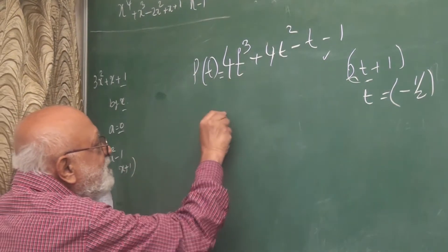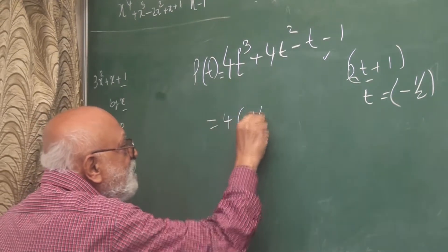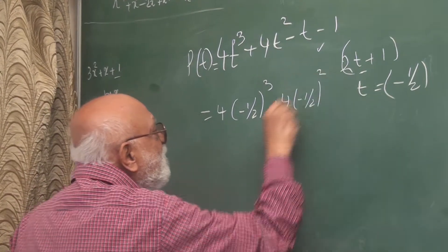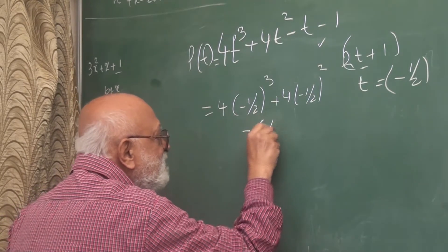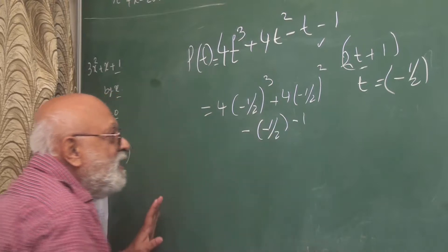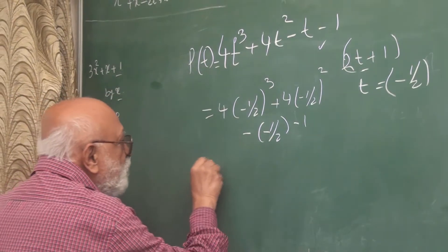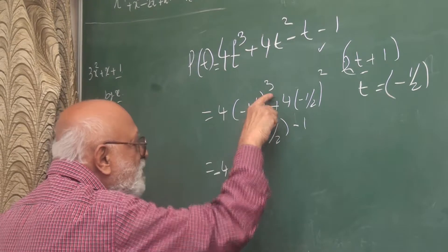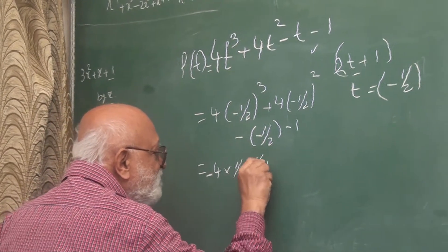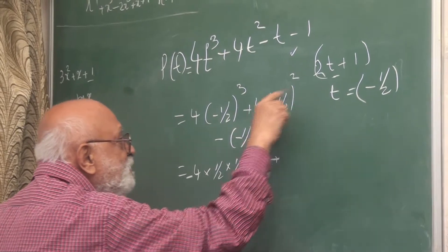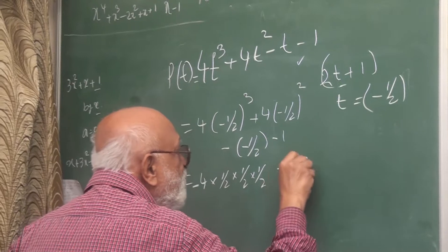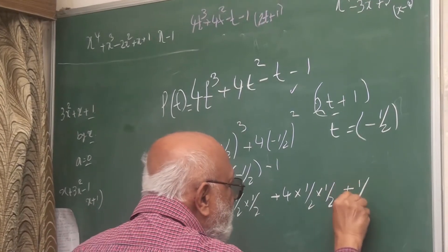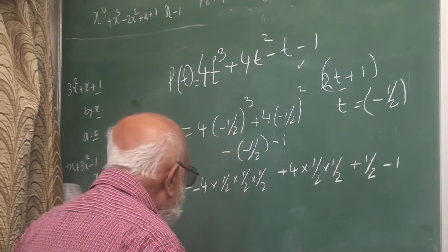Let us put the value of t here. This is 4 into minus half cubed, plus 4 into minus half squared, plus minus half minus 1. So it will be 4 into minus, this will be minus 4 because this minus will come — this is cube — so this will be half into half into half, plus this will be plus because it is squared, so this will be 4 into half into half, plus half, and this will be minus 1.